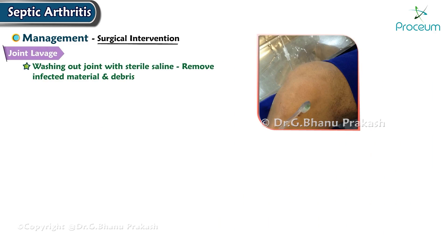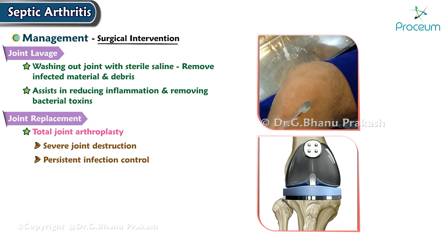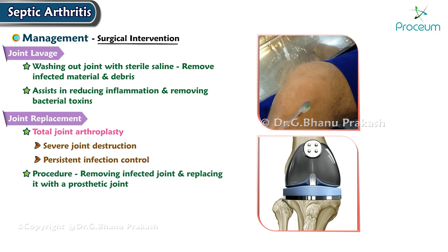Total joint arthroplasty may be considered in cases of severe joint destruction and persistent infection. The procedure involves removing the infected joint and replacing it with a prosthetic joint. Joint replacement is typically performed after the infection has been controlled with antibiotic therapy.